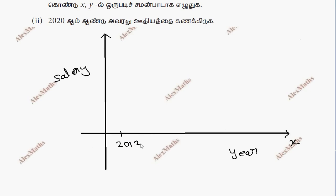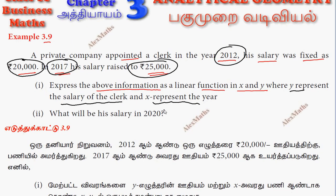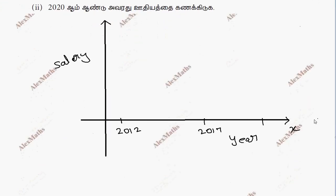So 2012 corresponds to 20,000, and 2017 corresponds to the salary of 25,000. This is a rough graph.